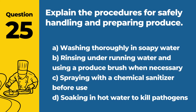Question 25. Explain the procedures for safely handling and preparing produce. Answer: B. Rinsing under running water and using a produce brush when necessary. Properly cleaning produce reduces the risk of foodborne illness by removing dirt and potential pathogens.